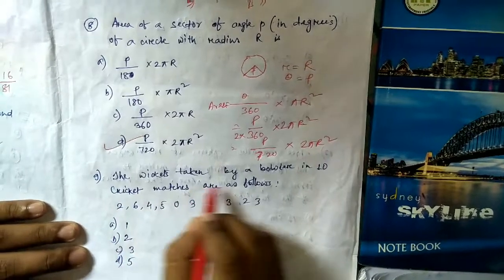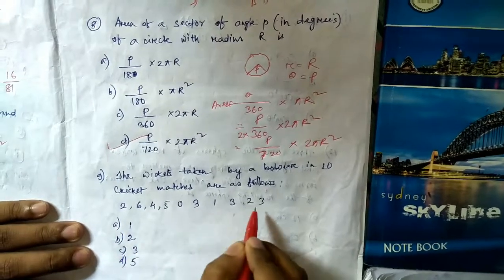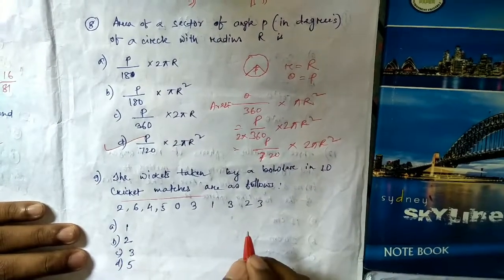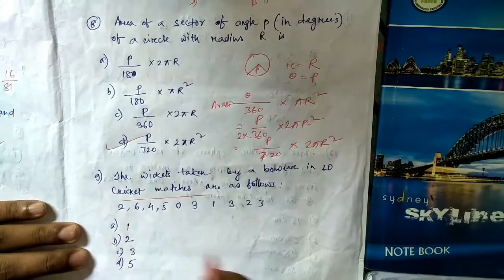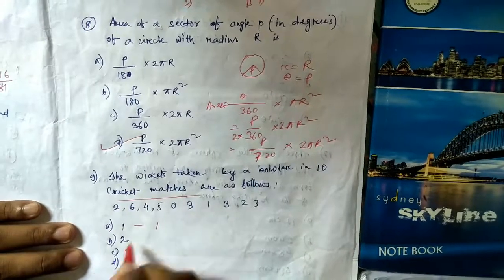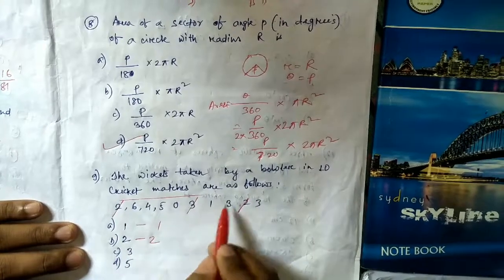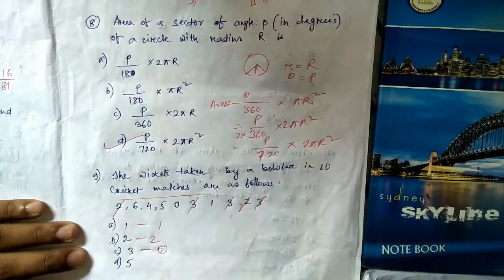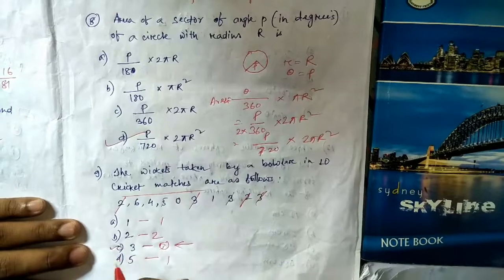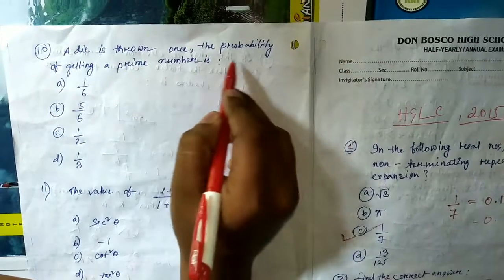Question number nine: find the mode of wickets taken by a bowler in 10 cricket matches: 2, 6, 4, 5, 0, 3, 1, 3, 2, 3. The mode is the value with the highest frequency. Checking: 1 appears once, 2 appears twice, 3 appears three times, 5 appears once. The highest frequency is 3, so the mode is 3.